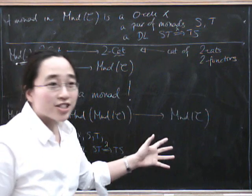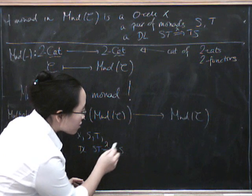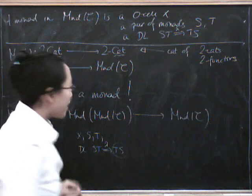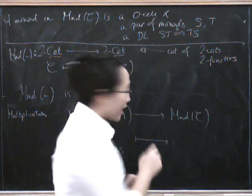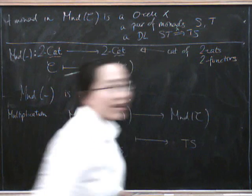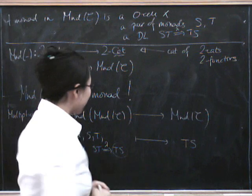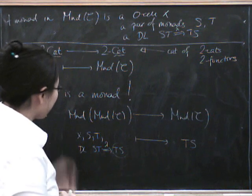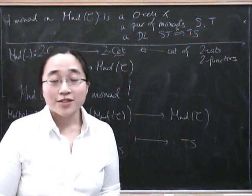And what this multiplication does, well, remember that having a distributive law like this gives us a monad structure on TS over here. And it turns out that the multiplication for the monad monad takes this distributive law and gives us back the monad TS inside on X, which is the same zero cell that we started with. So, well, that's about all I have to say about that.